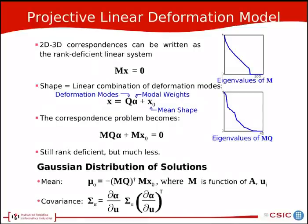In order to work with Gaussians, we're using a projective linear deformation model in which 2D to 3D correspondences can be written as a rank-deficient linear system, Mx equals 0, where M is formed of the centers of the 2D Gaussians and also the internal calibration matrix A. We also consider that the 3D pose can be expressed as a linear combination of deformation modes, which are base shapes, and when we combine these two things, we obtain directly the 2D correspondence problem with the deformation modes. This is still a rank-deficient system, but it is less rank-deficient than the full 2D to 3D correspondences.